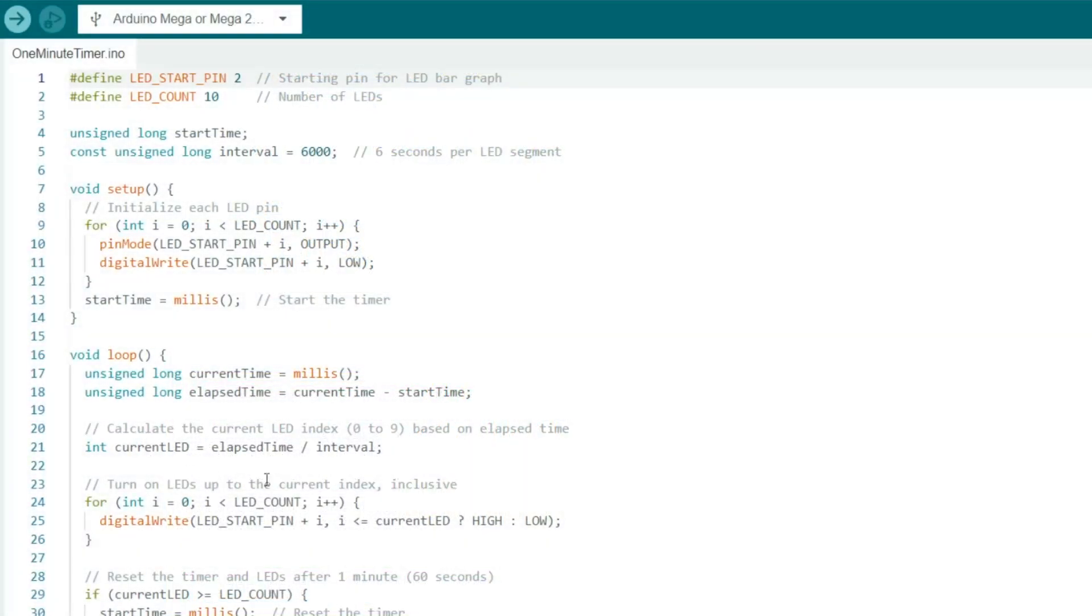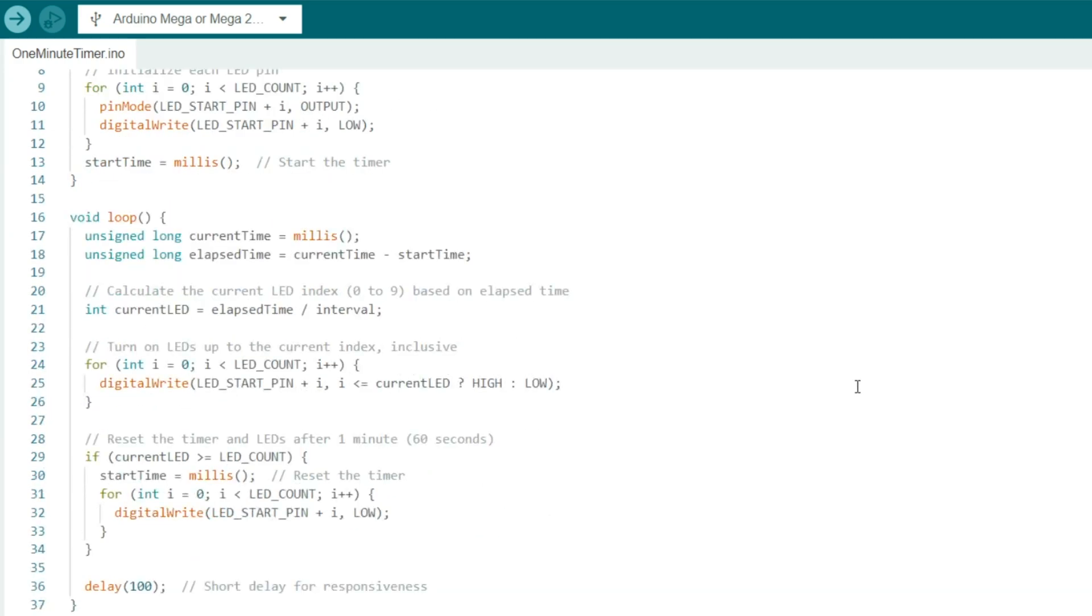Here's a look at the diagram in case you need it. The setup function initializes each LED as an output and sets it to low or off, then starts the timer by recording the current time with millis. The loop function calculates the elapsed time since the start and determines the current LED index based on elapsed time, then turns on all the LEDs up to and including the current LED and resets the timer and turns off all the LEDs after 60 seconds.